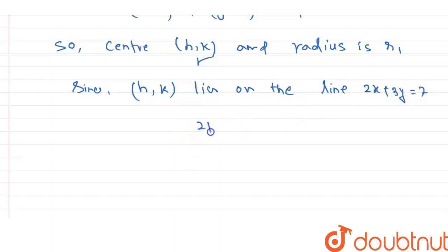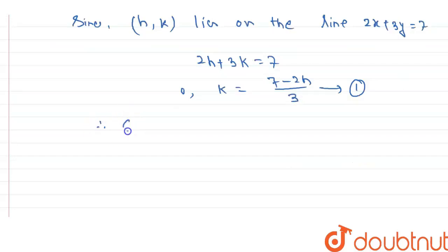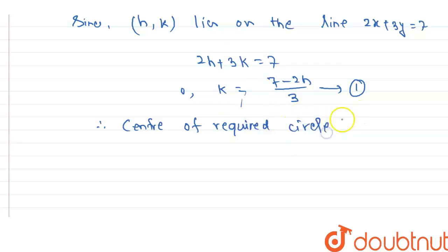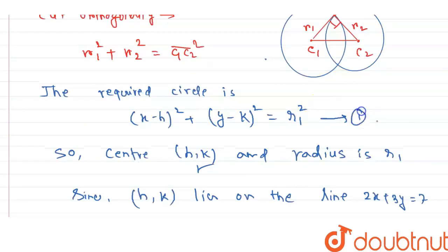Substituting the center into the line equation gives 2h + 3k = 7, so k = (7 - 2h) / 3. Therefore the center of the required circle can be written as (h, (7 - 2h)/3). This is equation 2, and the required circle form is equation 1.